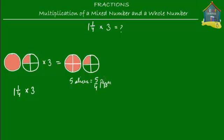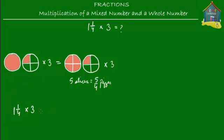So this is 5 fourths pizzas, or the fraction 5 upon 4. The fraction you get is 5 fourths. Now you still have to multiply these 5 slices by 3. So what we have done is we have changed this mixed number to the improper fraction 5 fourths.